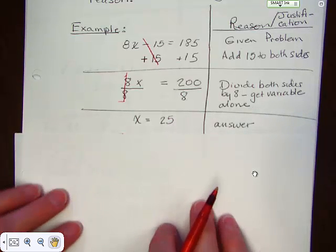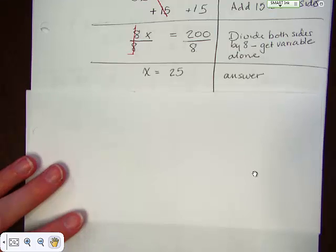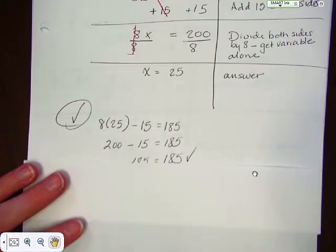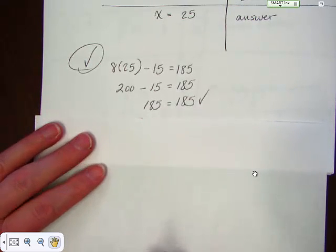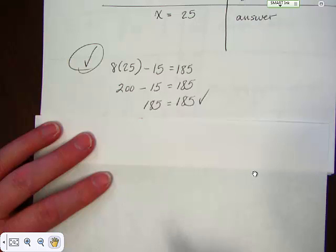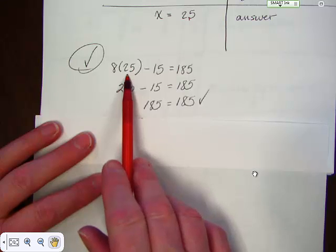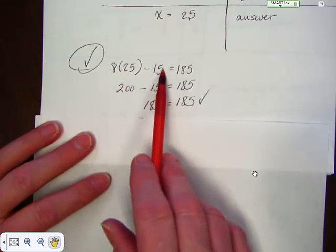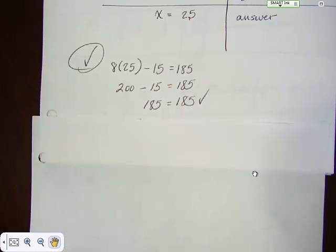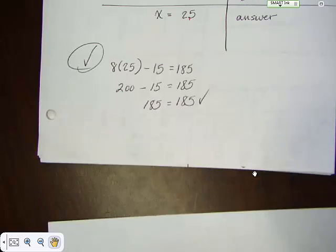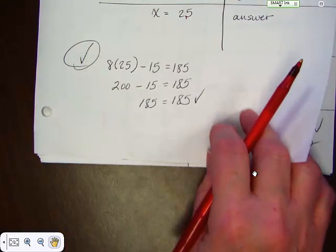That's the answer. Now, when we're starting to work with two-step equations, we need to check them to be sure that our answer is correct. If you check an equation every time you get the answer, you will never, ever, ever get it wrong — especially if you check it correctly. We're going to substitute the answer 25 into the original problem: 8 times 25 minus 15 equals 185. 200 minus 15 equals 185. 185 equals 185. Check! You know that you got the right answer.